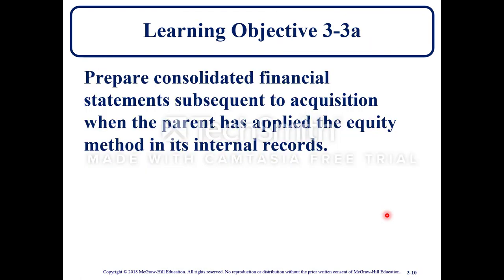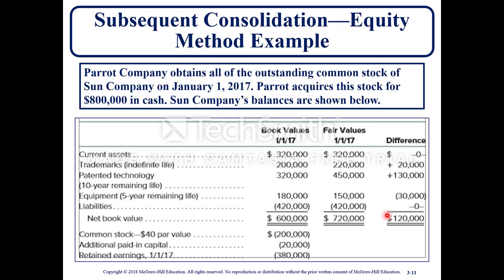Learning objective 3-3A: prepare consolidated financial statements subsequent to the acquisition when the parent has applied the equity method in its internal records. For the subsequent consolidation equity method example: parent company obtains all the outstanding common stock of Sun Company on January 1st, 2017. Parent acquires this stock for $800,000 in cash.